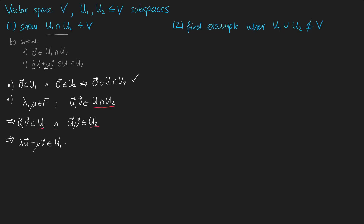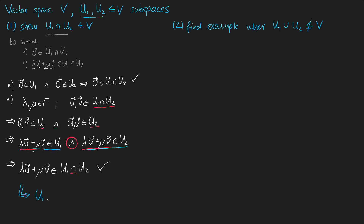In the next step, we can make use of the fact that u1 and u2 are valid subspaces. Because they are both valid subspaces, we can multiply their vectors with scalars and add them together, and the resulting vector is still in u1 and respectively u2. Because we have the same vector on both sides linked together with an AND operator, we can rewrite our statement as: lambda times u plus mu times v is in the intersection of u1 and u2. Whereby we have verified that the intersection of u1 and u2 is indeed a subspace of v.